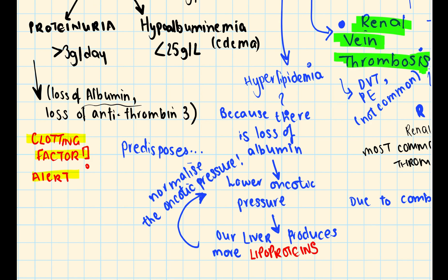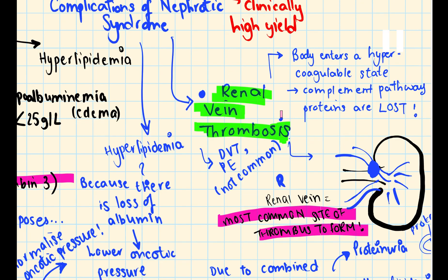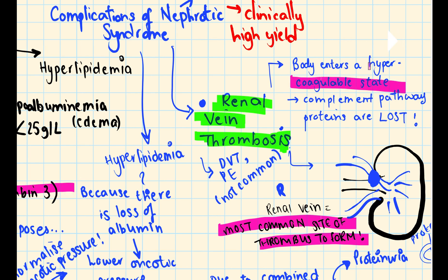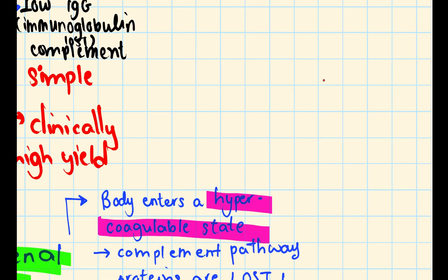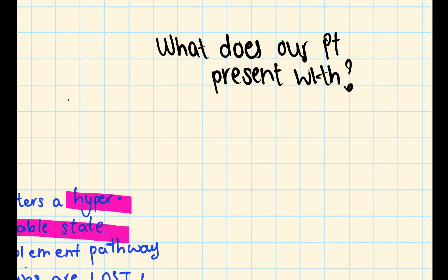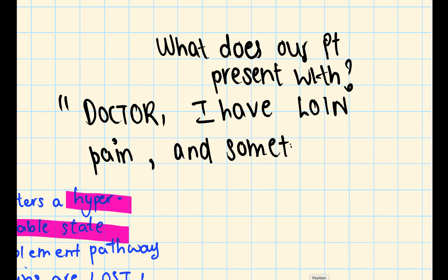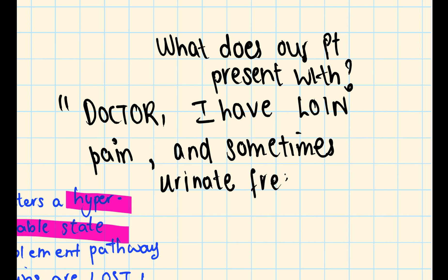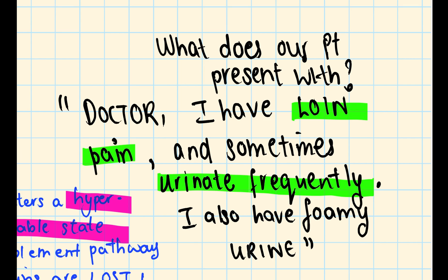Recap: loss of antithrombin 3 leads to a hypercoagulable state and renal vein thrombosis. Loss of proteins and immunoglobulins leads to increased susceptibility to infections. A patient with nephrotic syndrome will present with loin pain, increased frequency of urination — clinically termed oliguria — and foamy urine, also known as frothy urine. Frothy urine occurs because proteins are lost into the urine, causing proteinuria, which gives urine that characteristic frothy appearance.